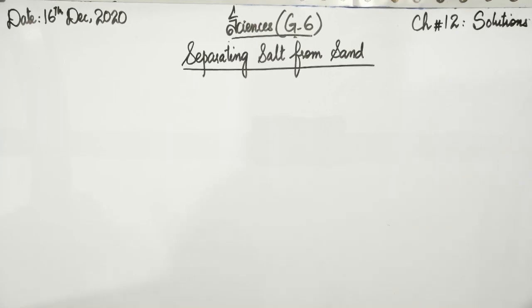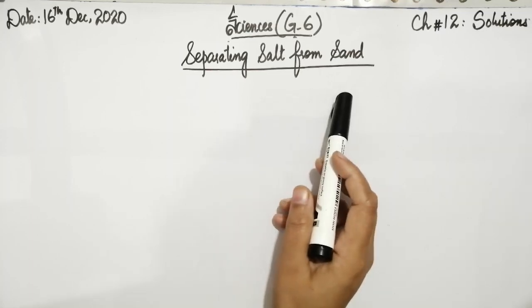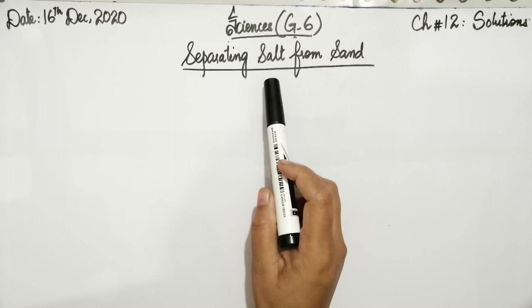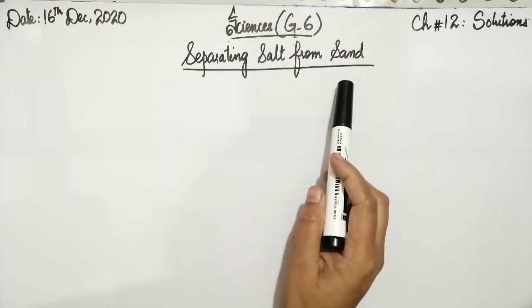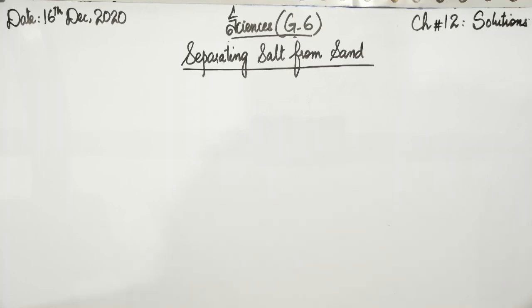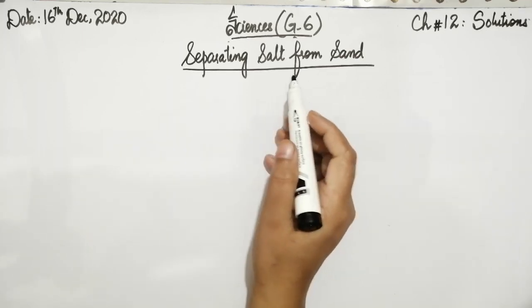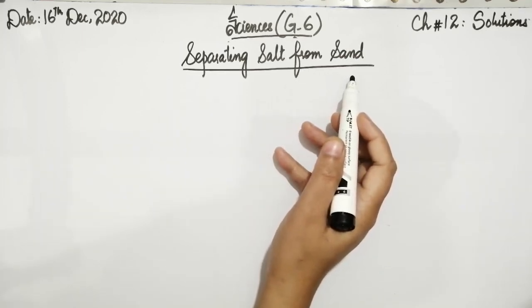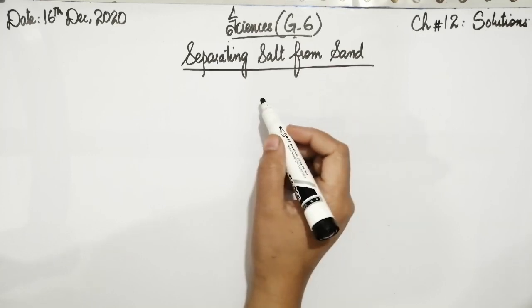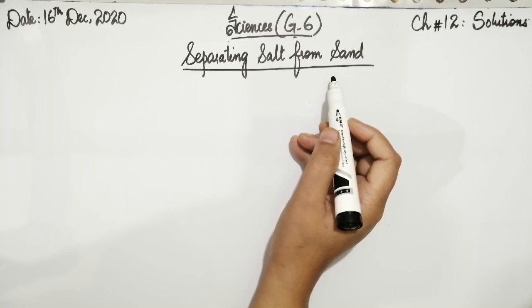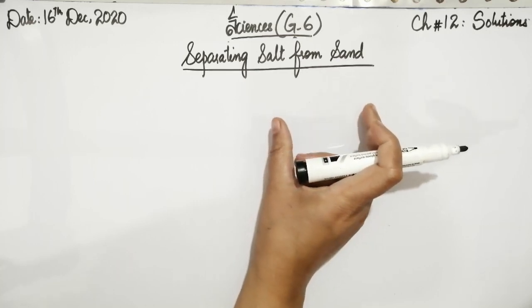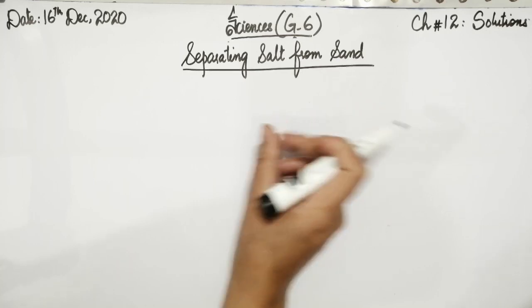Dear students, Assalamu alaikum. Today, I am here to present the next topic on the separation of salt from sand. You can see that salt is a soluble substance while sand is an insoluble substance. Salt will dissolve in water while sand will not dissolve in water. This fact can be used to separate these two substances from each other when they are mixed together in water.